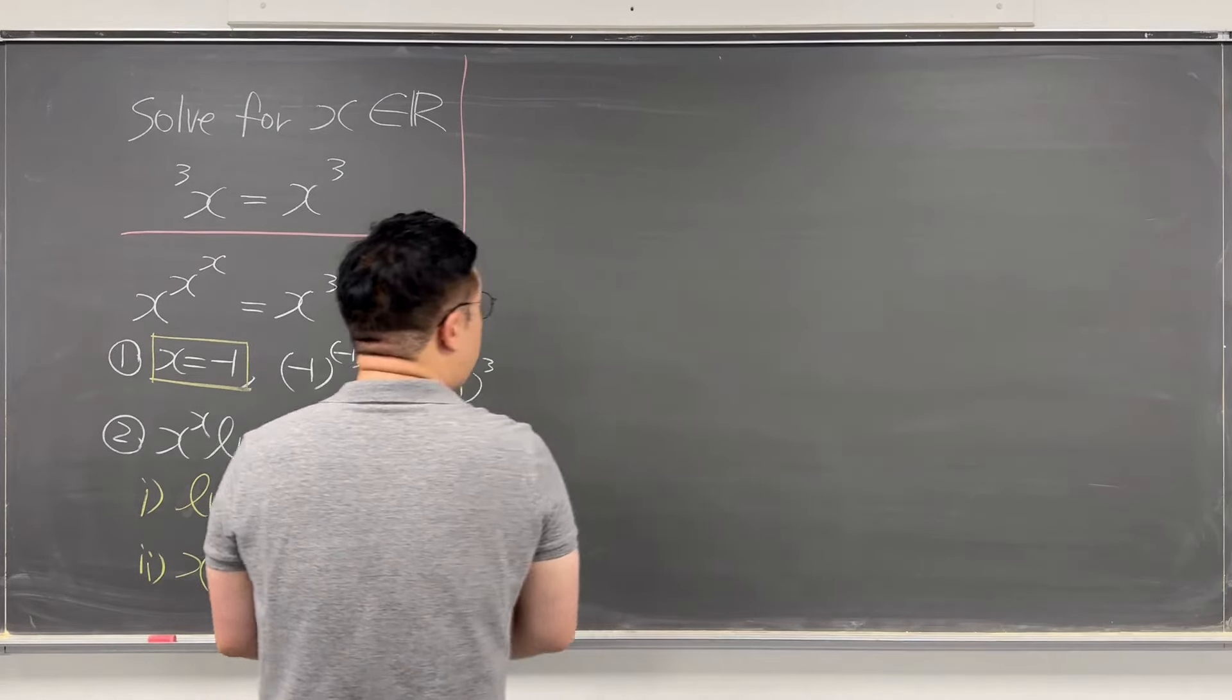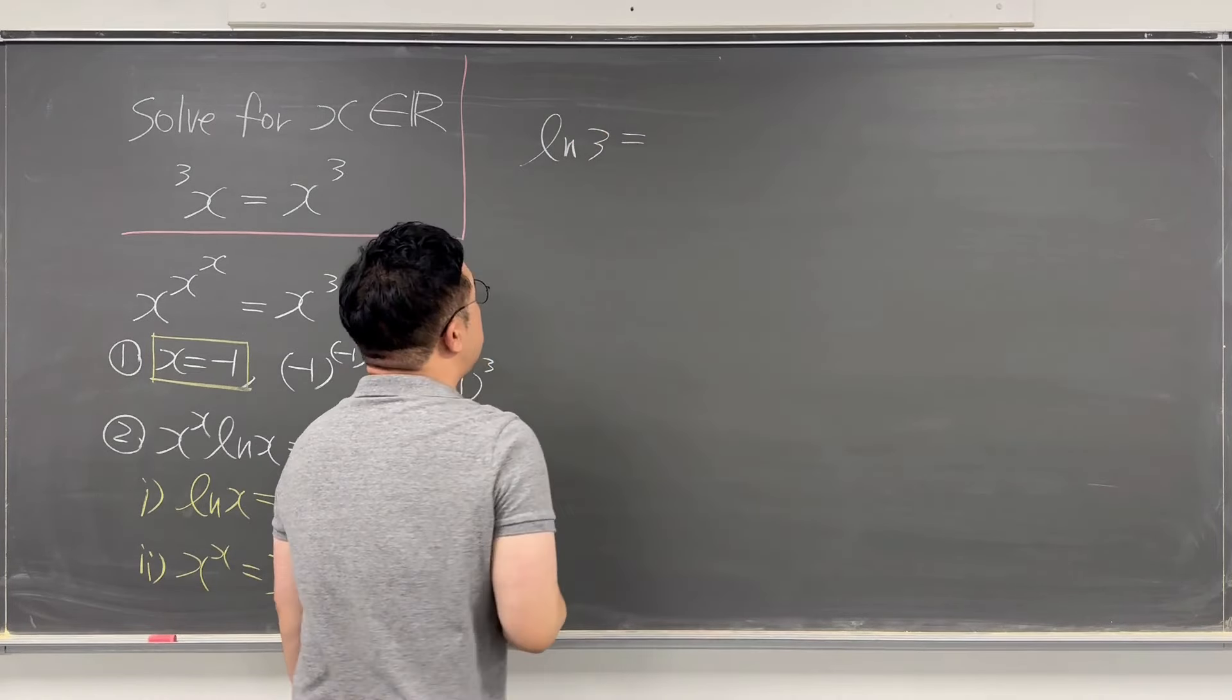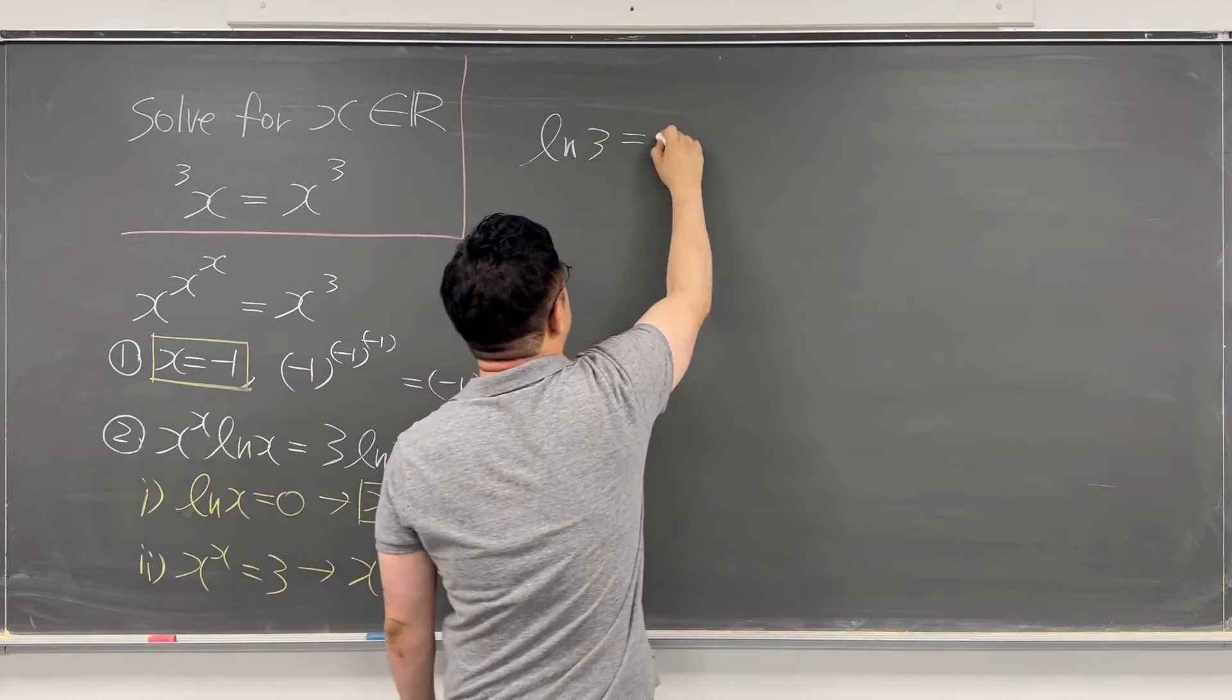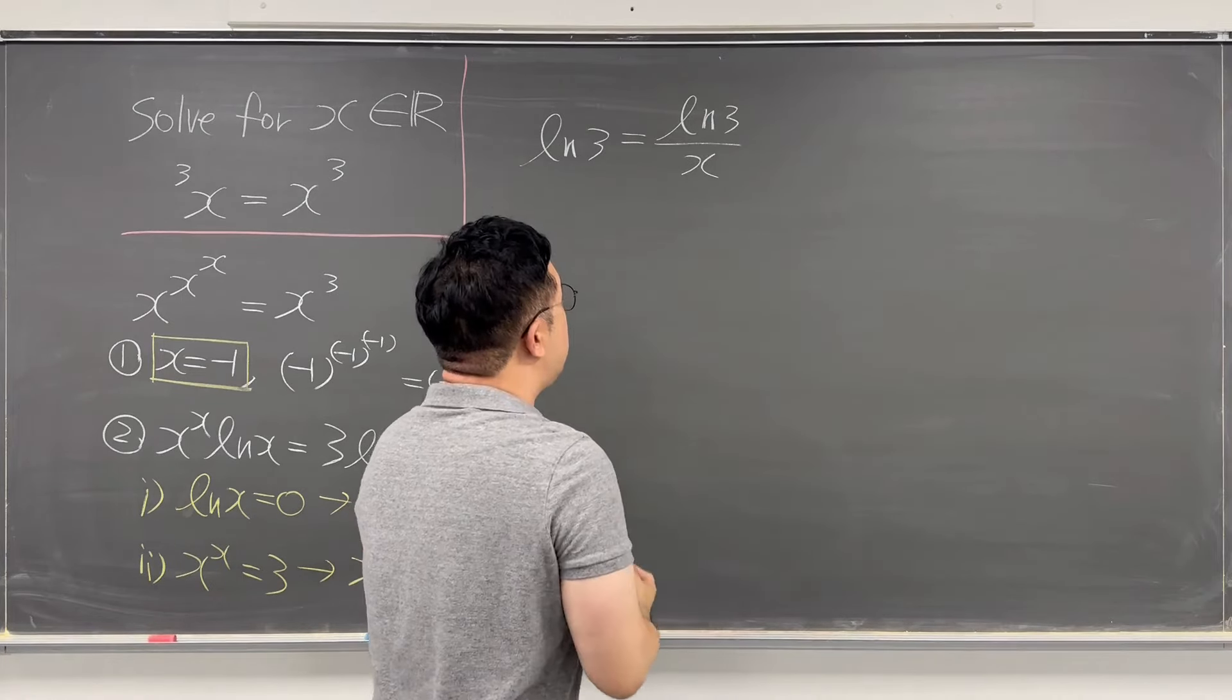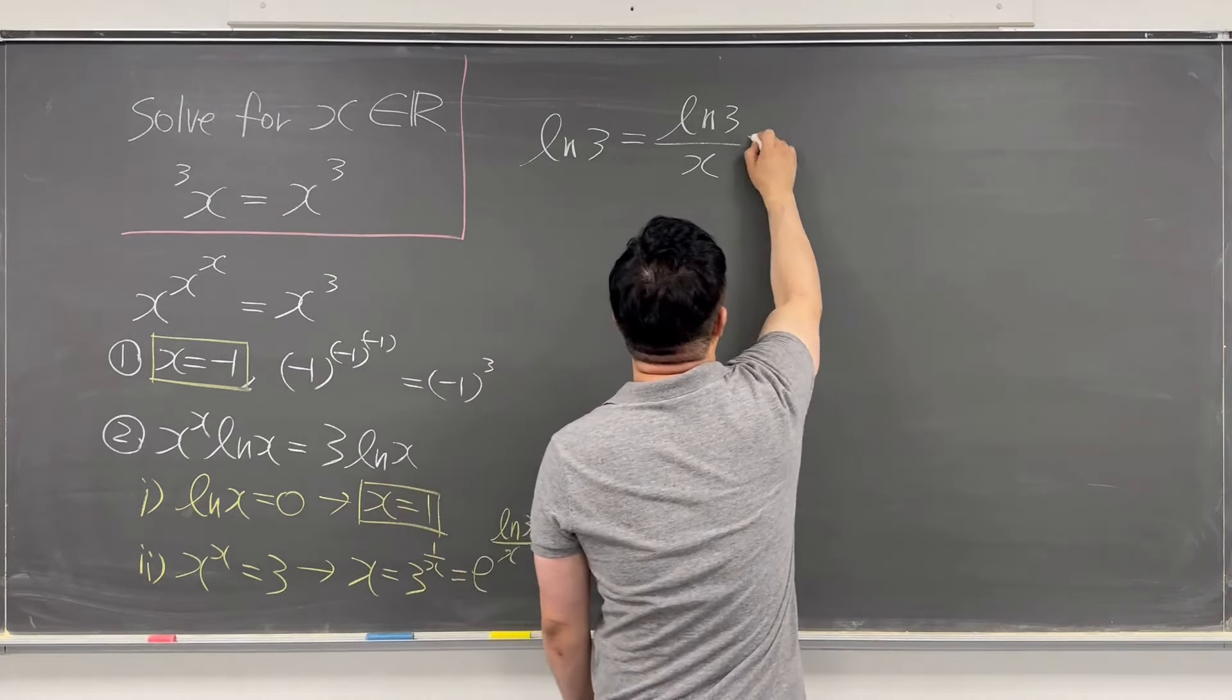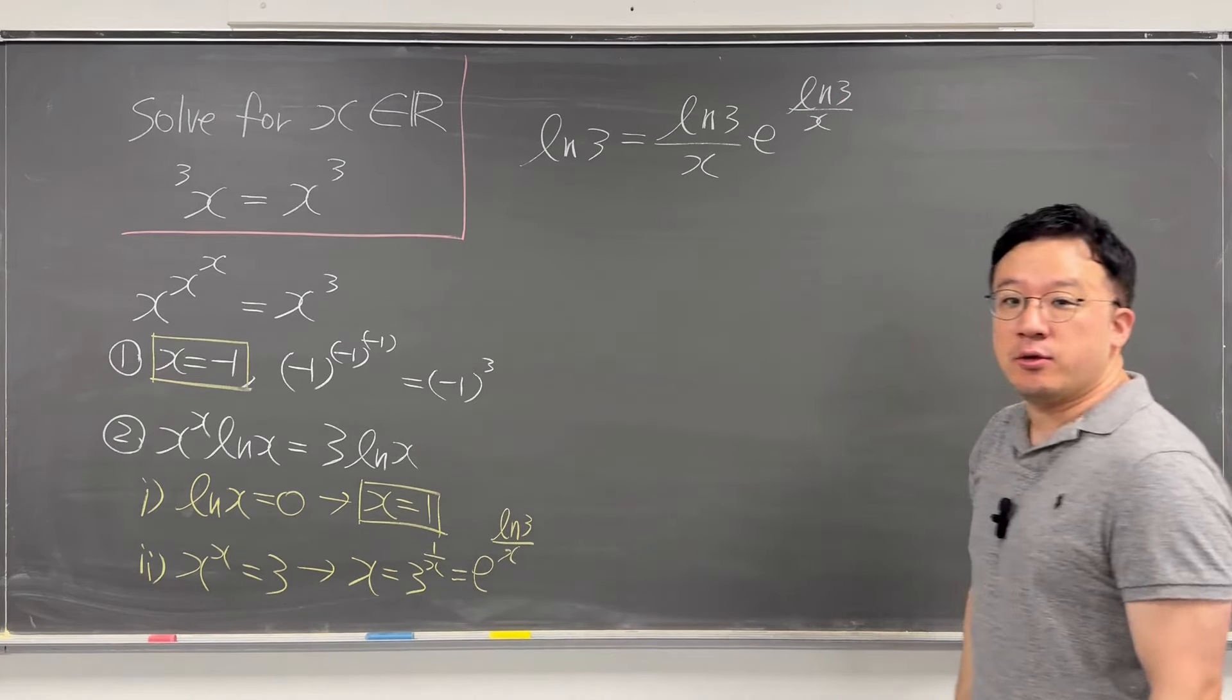So using this form, we can now talk about ln 3. ln 3 is equal to ln 3 over x times e to the power of ln 3 over x as our equation.